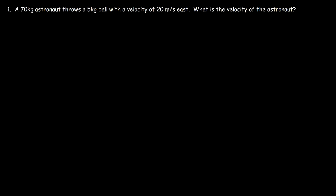In this video we're going to talk about how to solve conservation of momentum problems. Here's the first one: a 70 kilogram astronaut throws a 5 kilogram ball with a velocity of 20 meters per second east. What is the velocity of the astronaut? Let's draw a picture — this is the astronaut.